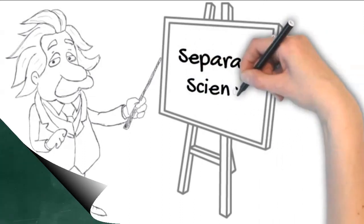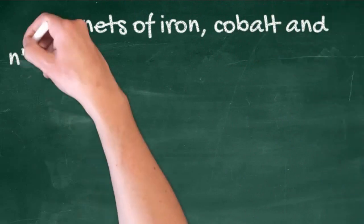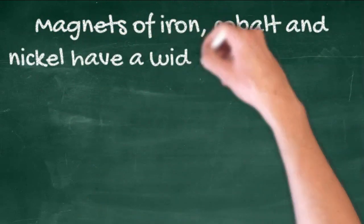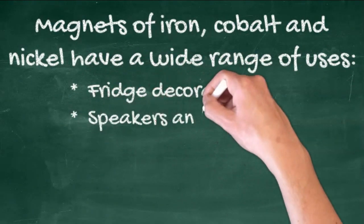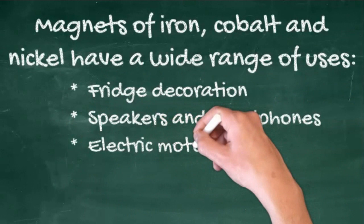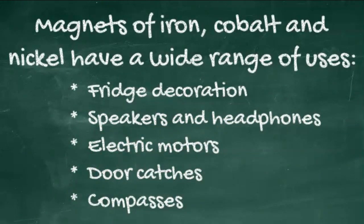We come across magnets all the time. Magnets of iron, cobalt and nickel have a wide range of uses. You see them in fridge magnets, speakers and headphones, electric motors, door catchers, even the obvious compasses. Make sure you can remember at least one example of a use.